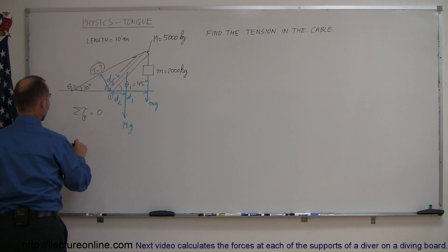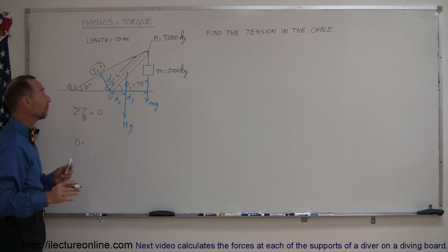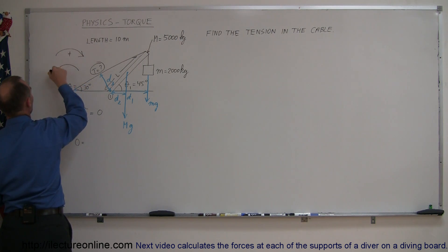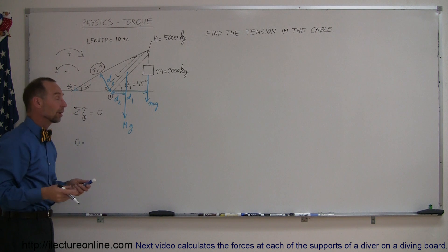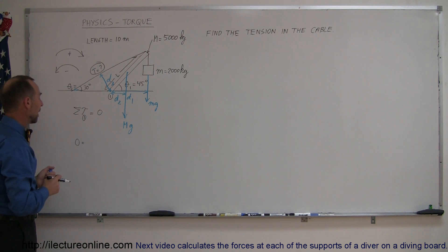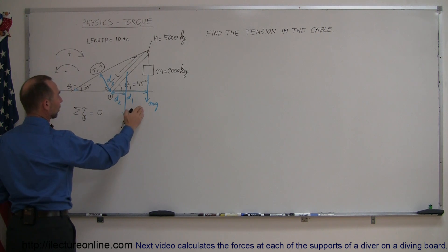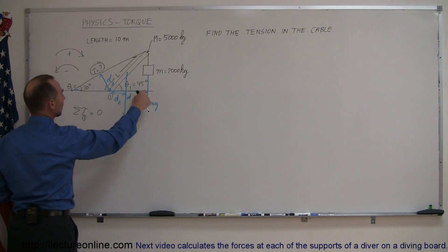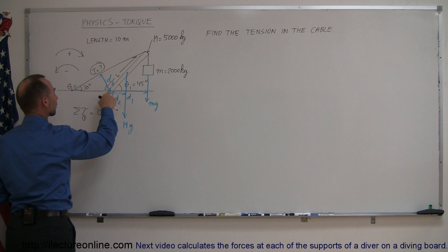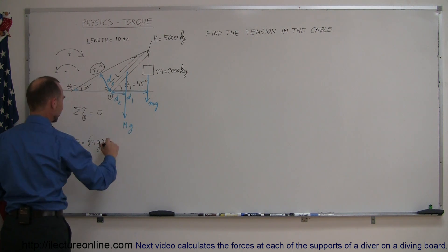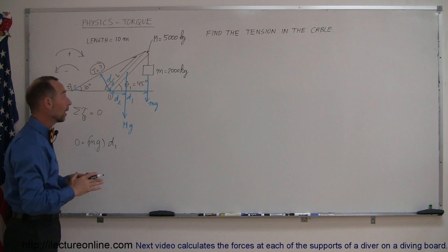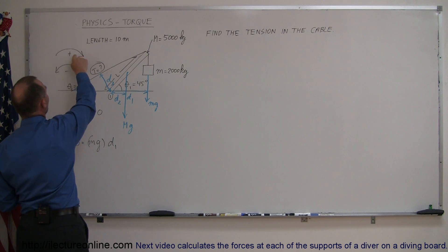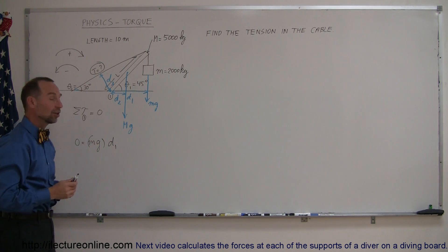The sum of the torques equals zero. We also need to define the direction of torque. I'm going to call a clockwise torque a positive direction, and a counterclockwise torque a negative direction — that is really arbitrary; some textbooks do it the other way around. By definition, torque is force times distance. So we have mg times d1. Notice that this force would cause the beam to rotate clockwise, so we call that a positive torque: positive mg times d1.